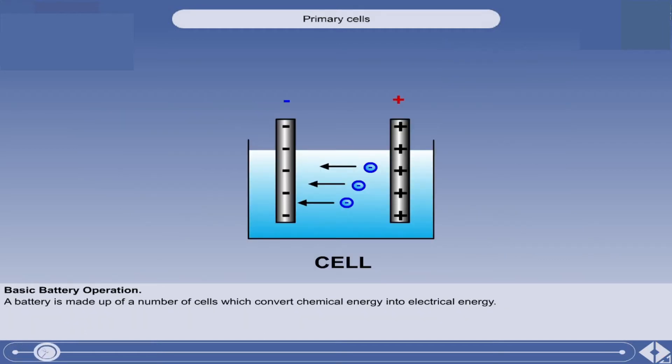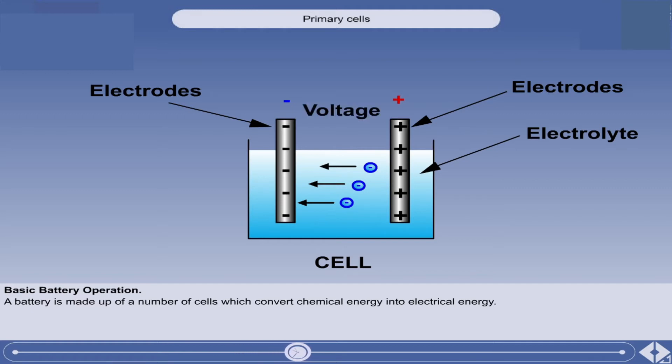A battery is made up of a number of cells which convert chemical energy into electrical energy by a transfer of electrons from one material or electrode to another through a chemical known as an electrolyte, causing a potential difference or voltage between the two electrodes.